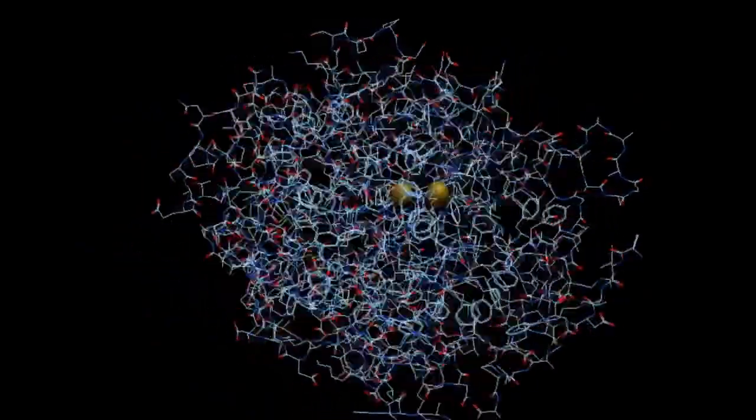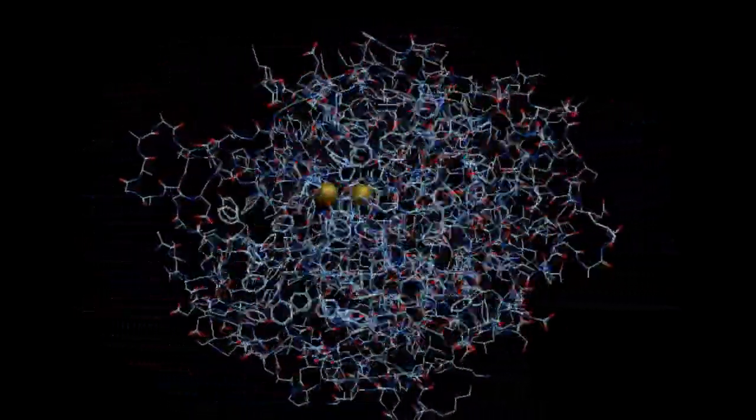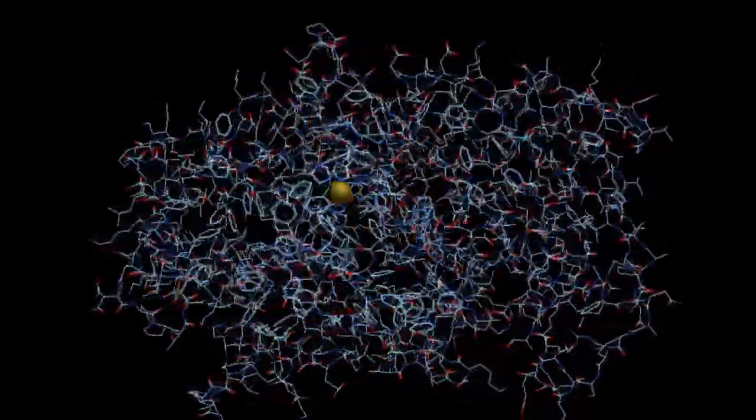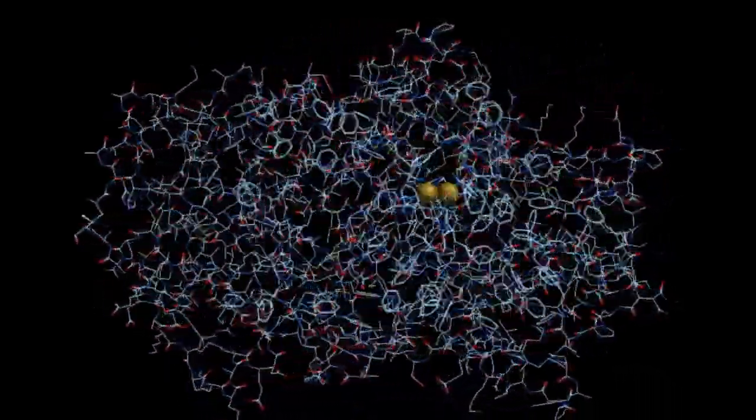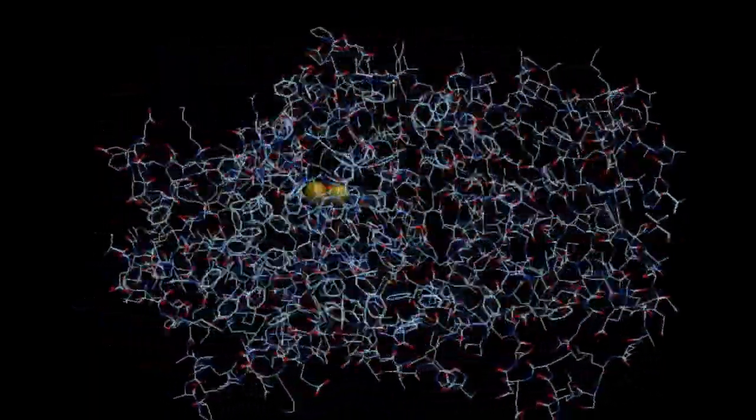We can also display a protein structure in a wire diagram. The two spheres that you see in the middle are the two copper ions, so the wire diagram allows us to locate the active site.